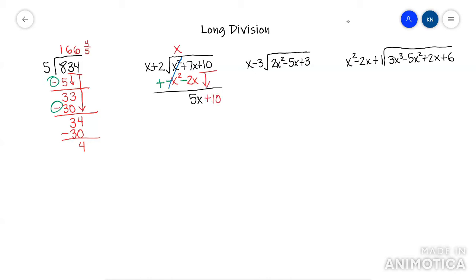Okay, now the process repeats. First term divided by first term. 5X divided by 5, 5X divided by X is 5. You then take the 5 and distribute. So that's going to be 5X plus 10.